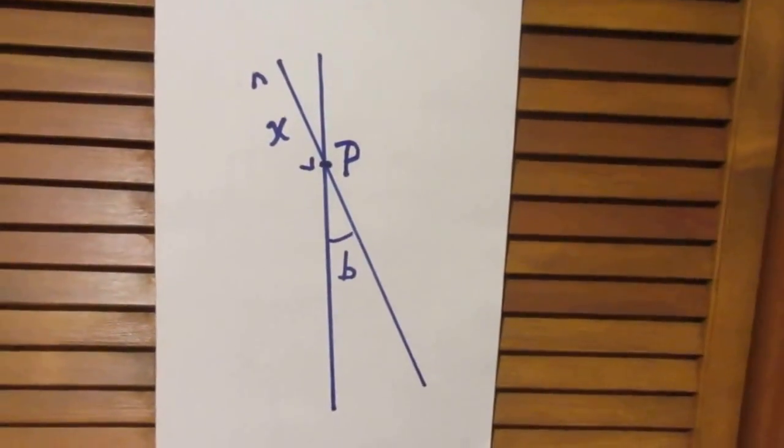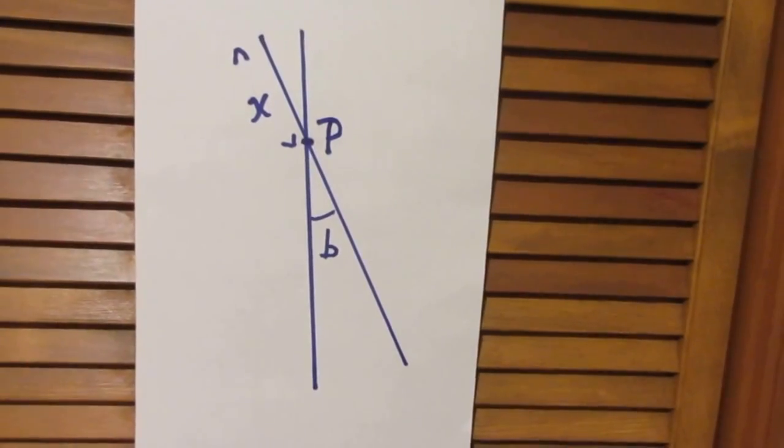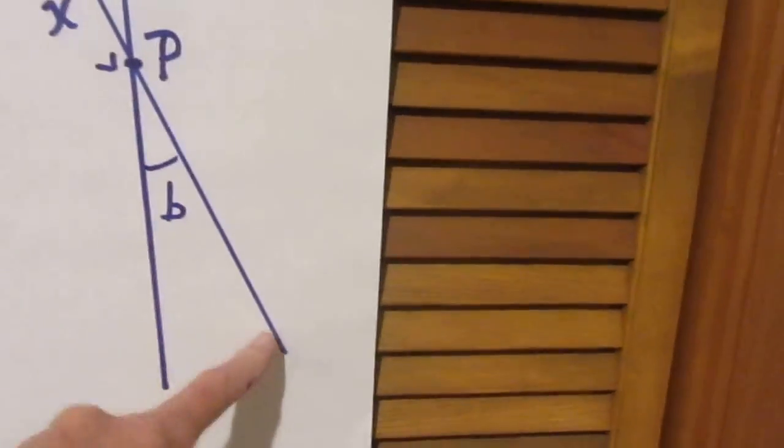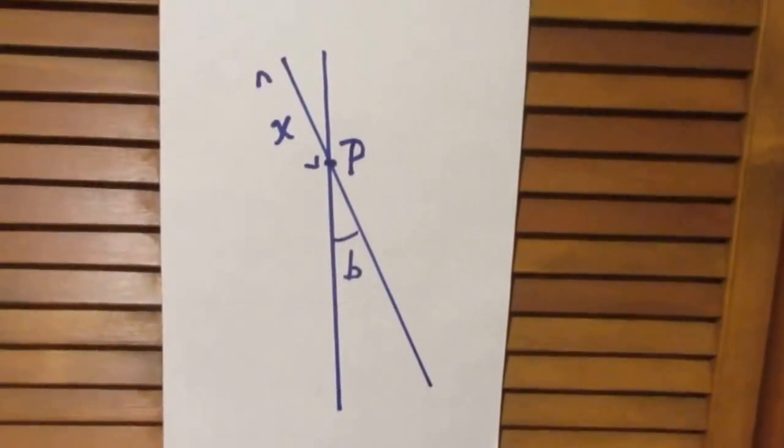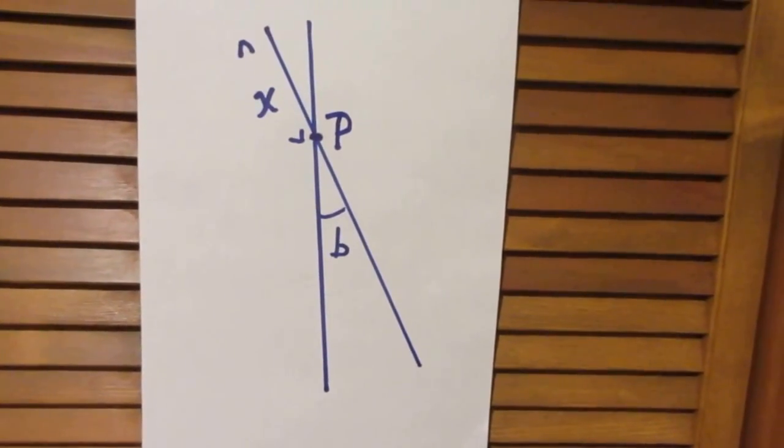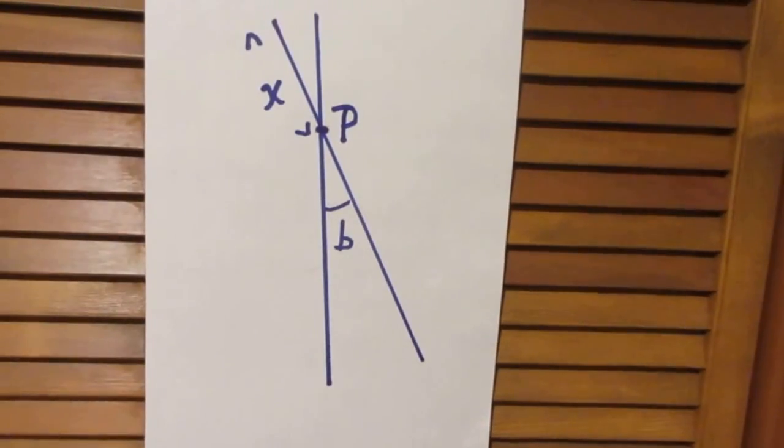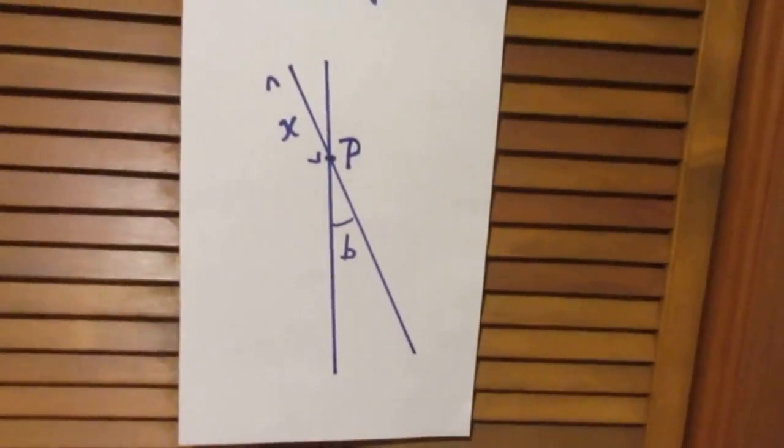So once more: are there any values of x—and you express them of course in terms of the total length of the rod—so are there any values of x for which the period of oscillation about point P is the same as the period if I oscillated the rod from the endpoint?